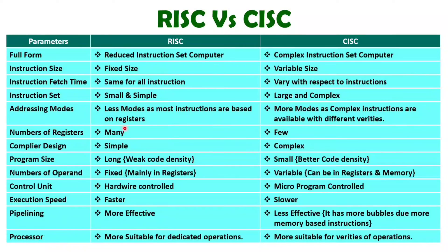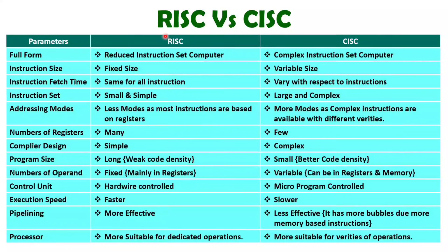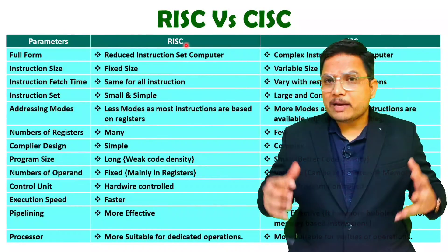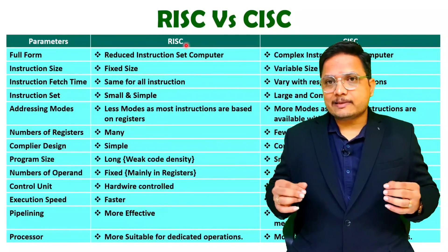When you talk about the processor, RISC architecture is more suitable for dedicated operations and CISC architecture is more suitable for varieties of operations. For example, in the majority of ARM processors, we are using RISC architecture. But CISC architecture is available with Intel's earlier processors like 8085 and 8086, which were using CISC architecture. But nowadays, in 2022, the majority of processors are following RISC architecture. Majority of microcontrollers are also following RISC architecture. That is how the basic differences are there with RISC and CISC.